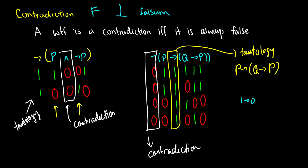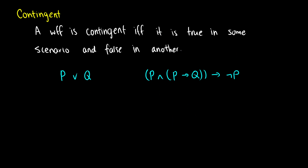Now every other well-formed formula that is neither a contradiction nor a tautology is called contingent. That means it's true in one scenario and false in another.